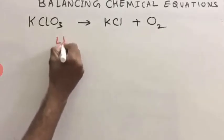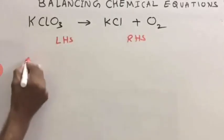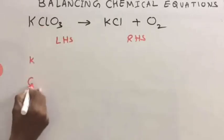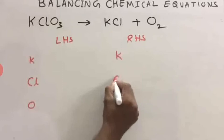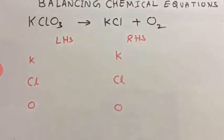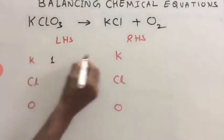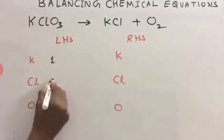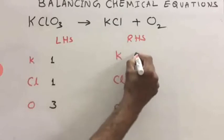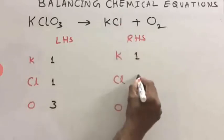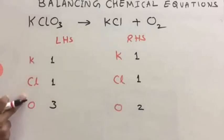Write LHS and RHS. On LHS you have potassium, then chlorine, then oxygen — same elements on RHS. Number of atoms: potassium on LHS is 1, chlorine is also 1, oxygen 3. On RHS: potassium 1, chlorine 1, oxygen 2. Potassium and chlorine are balanced.